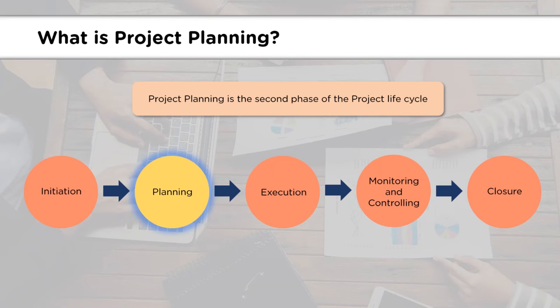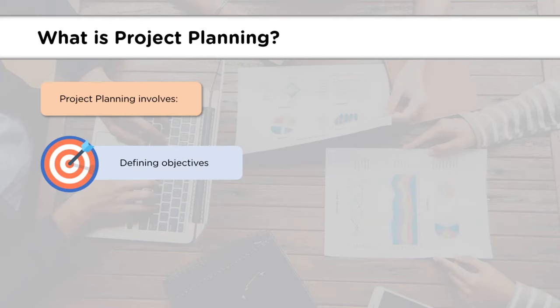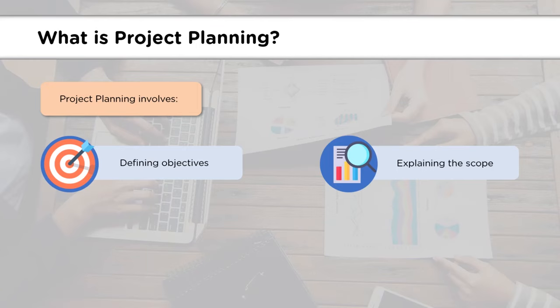Project planning is the second step or phase of the project lifecycle. The project lifecycle has five different phases from initiation to closure. We will be learning about this phase that comes immediately after initiation, in which the project plan is documented and further requirements are defined. Project planning includes describing the objectives or outputs we expect the project to yield, and elaborating the scope to make sure what the project is all about and what can be expected from it.